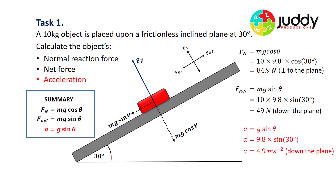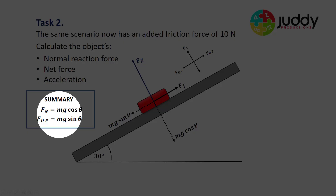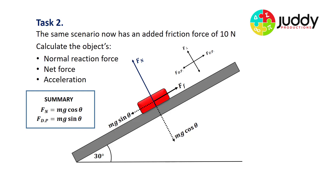Quite simple when using an inclined plane without friction. Now let's consider scenario 2, which is exactly the same scenario but with a friction force of 10 newtons added. This is shown in the diagram with the friction force acting up the plane. Same approach: we want to calculate the normal reaction force, the net force, and the acceleration. The normal is still Mg cos theta, and the force component down the plane is still Mg sin theta, but we need more work for the net force and acceleration.